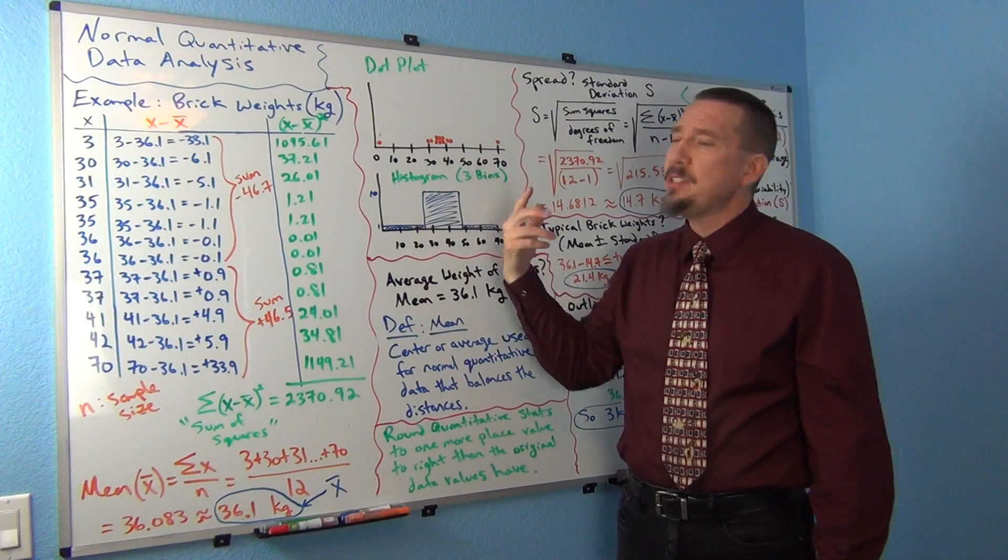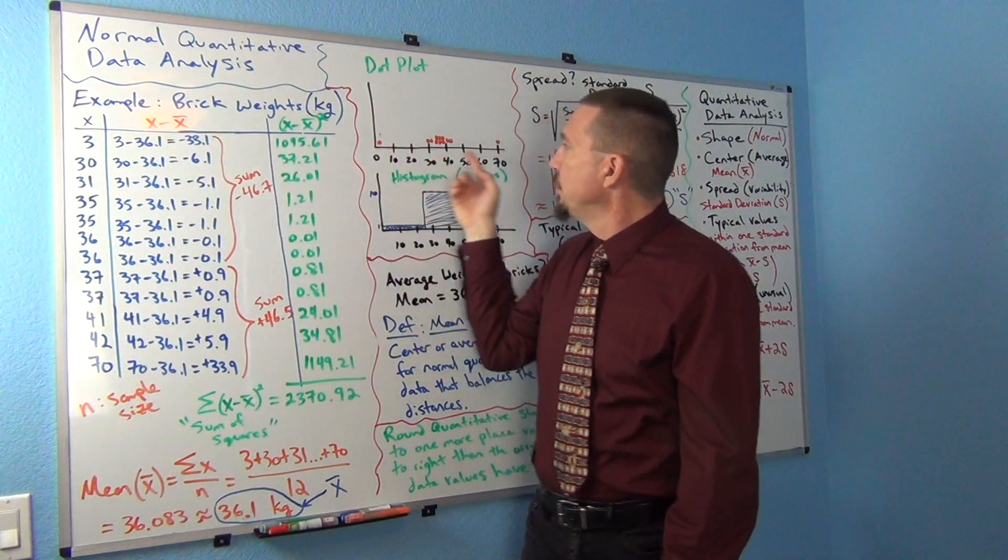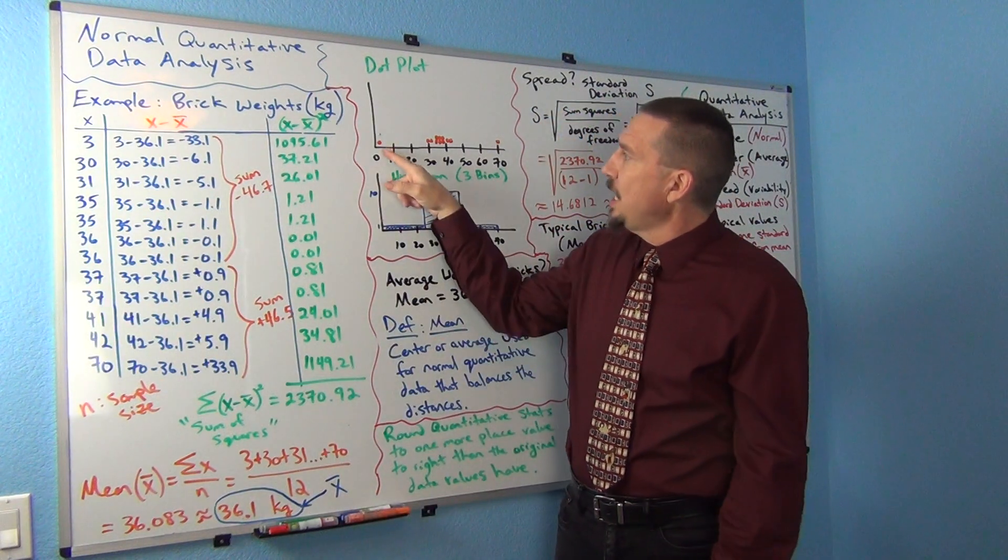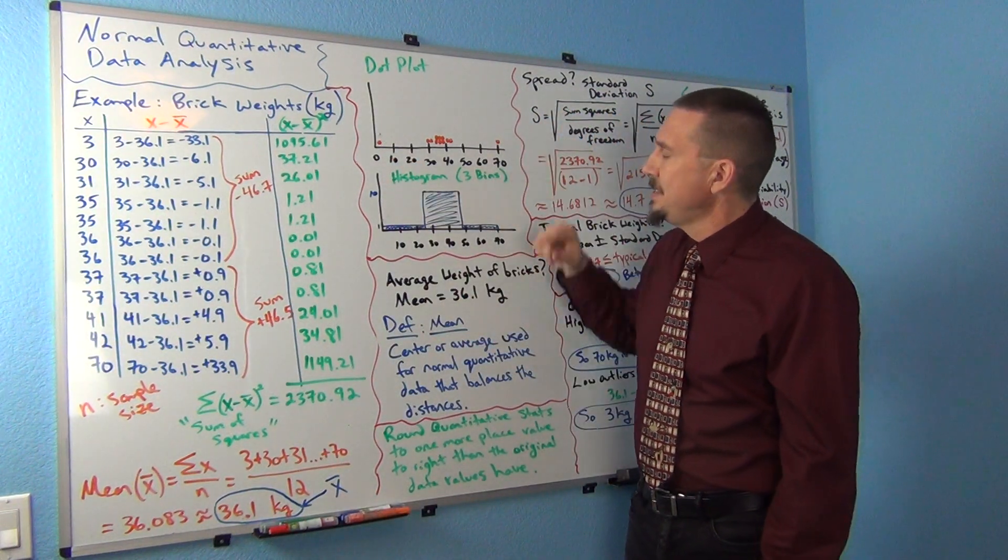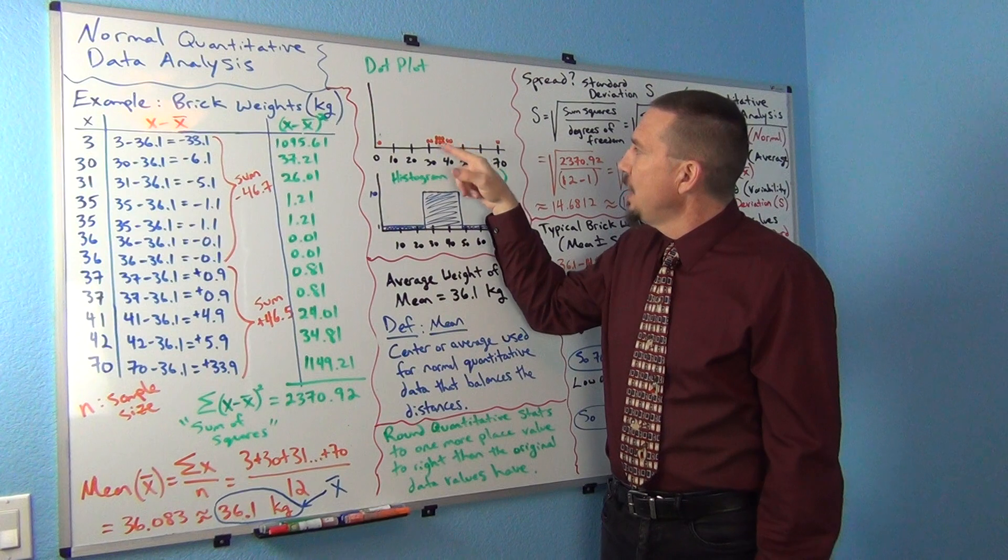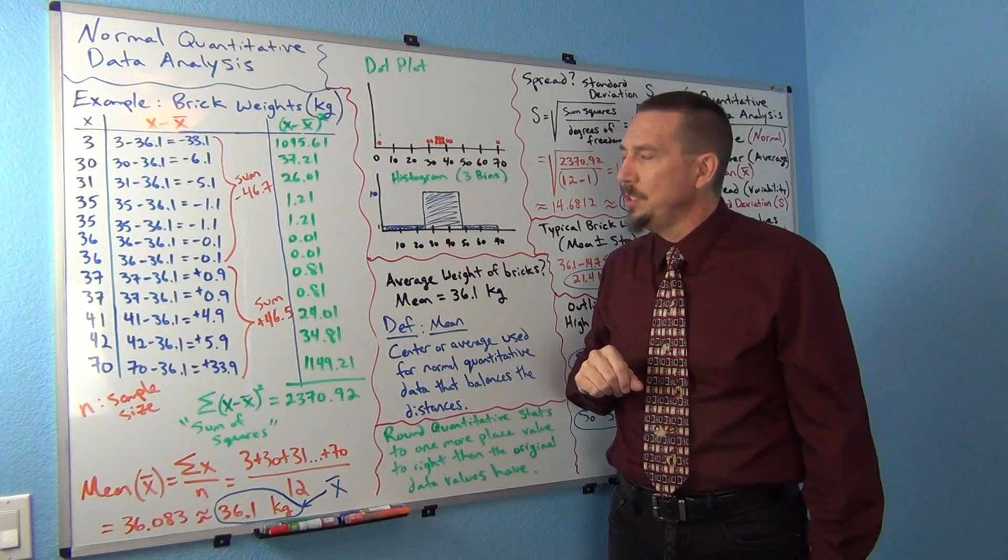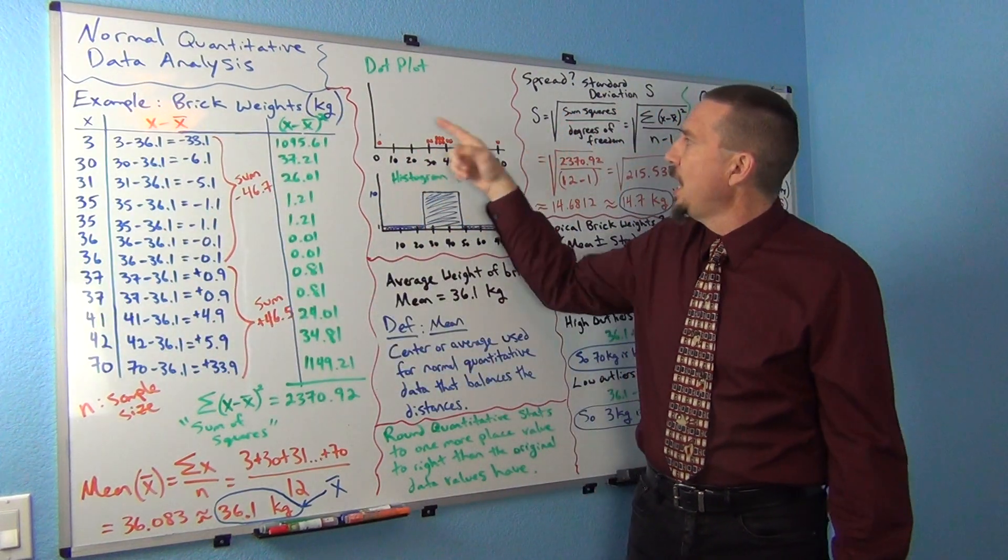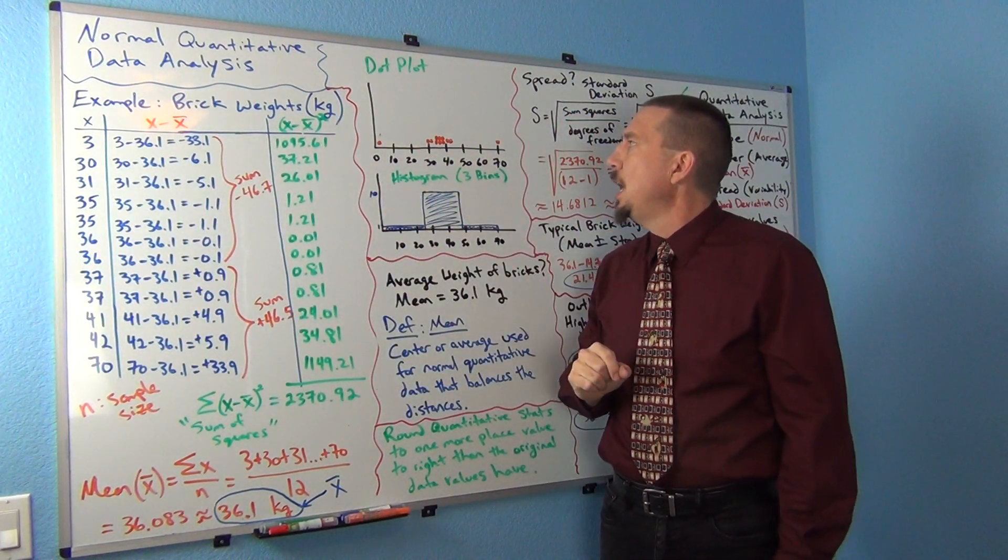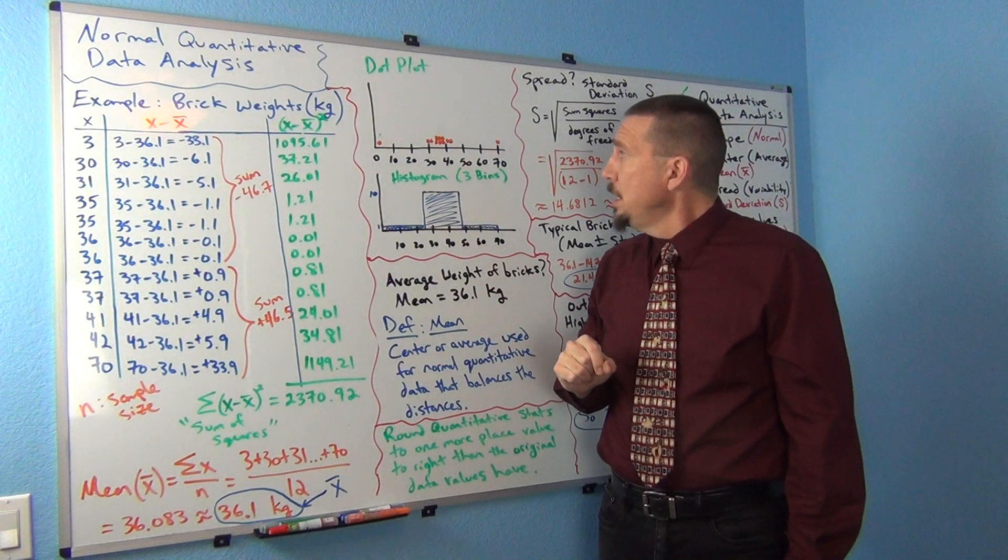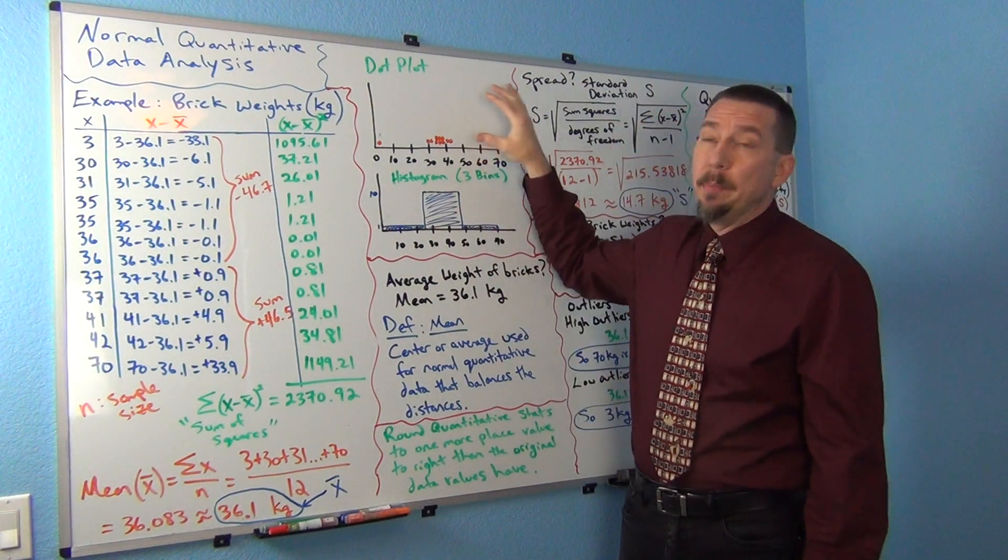So a dot plot simply puts a dot on a number line for every single number in your data set. You'll see there's a dot at three and here's a dot at seven and looks like a bunch of dots in the thirties. And look, a couple dots in the early forties there, just like our data. So basically put a dot for every number in the data set.